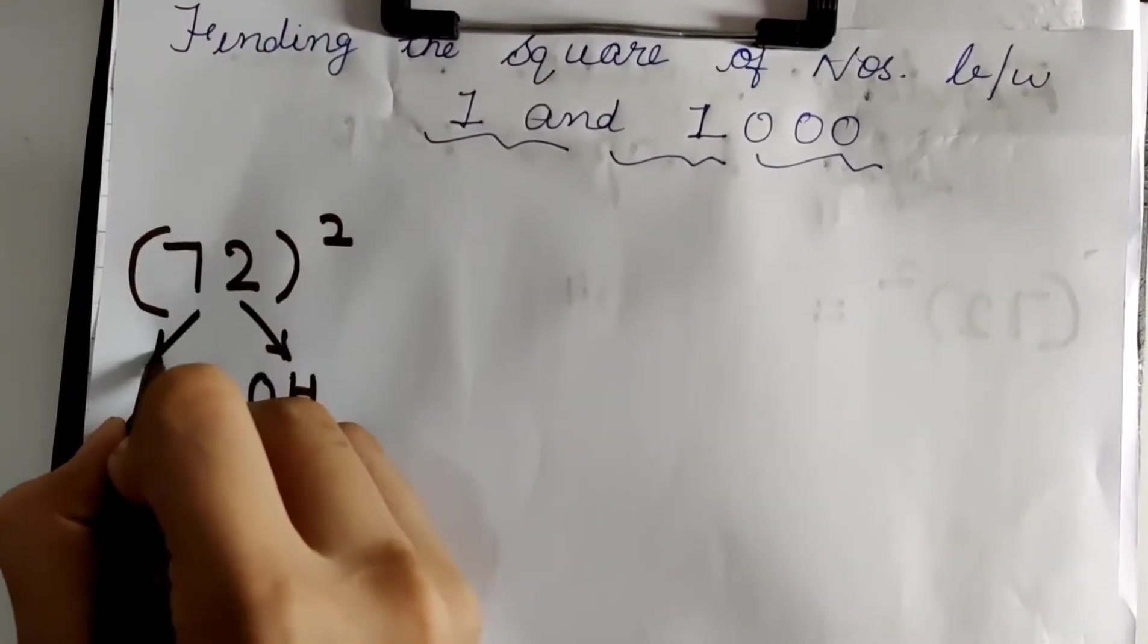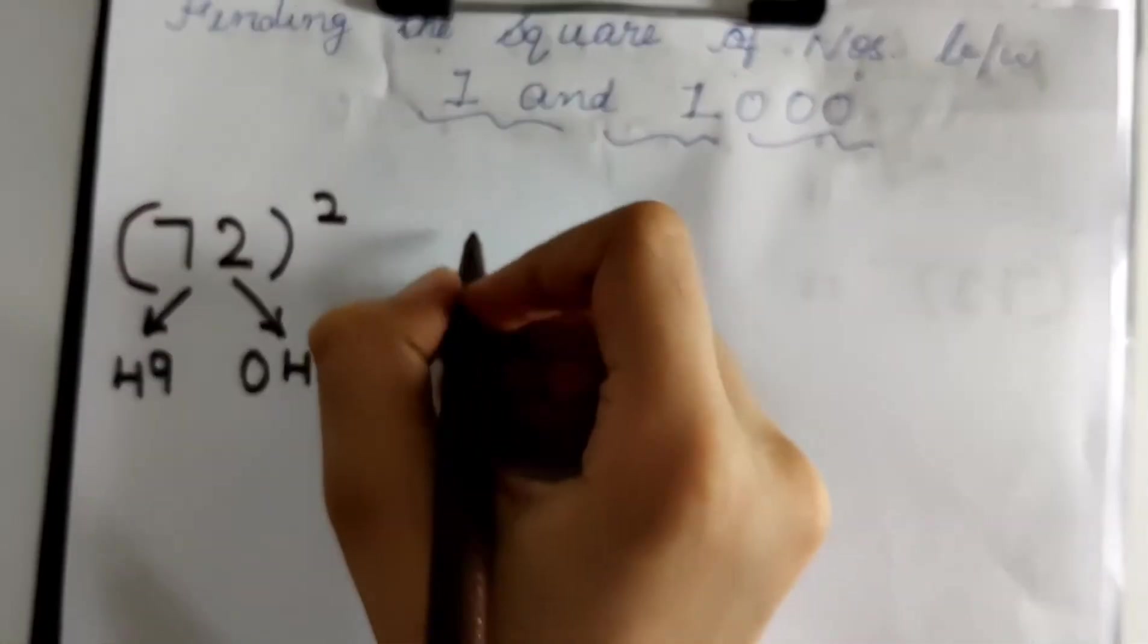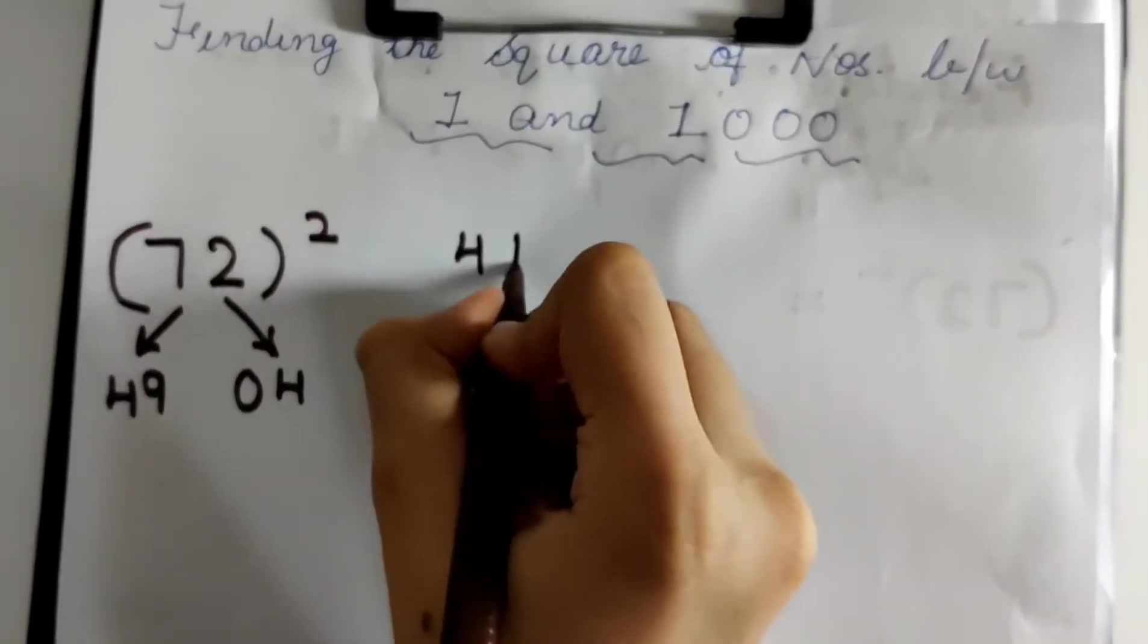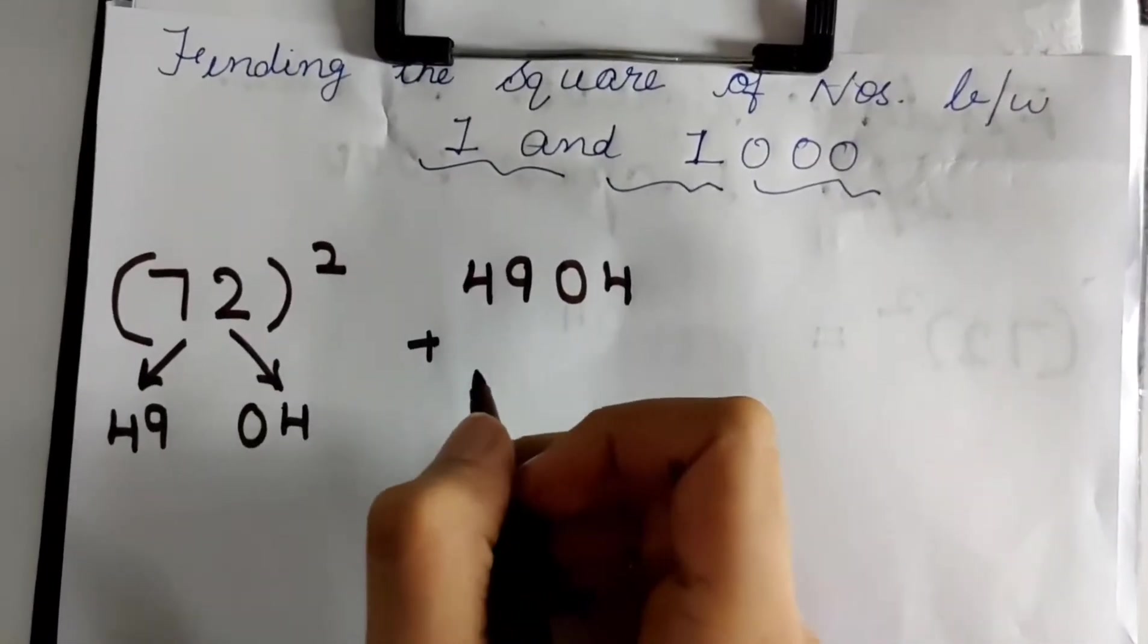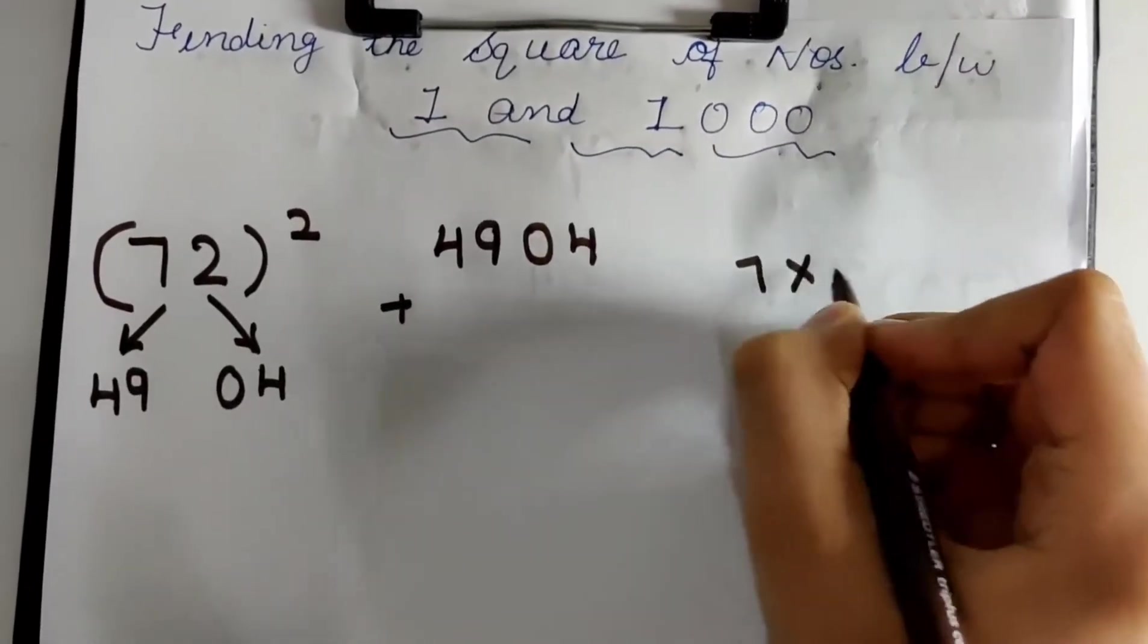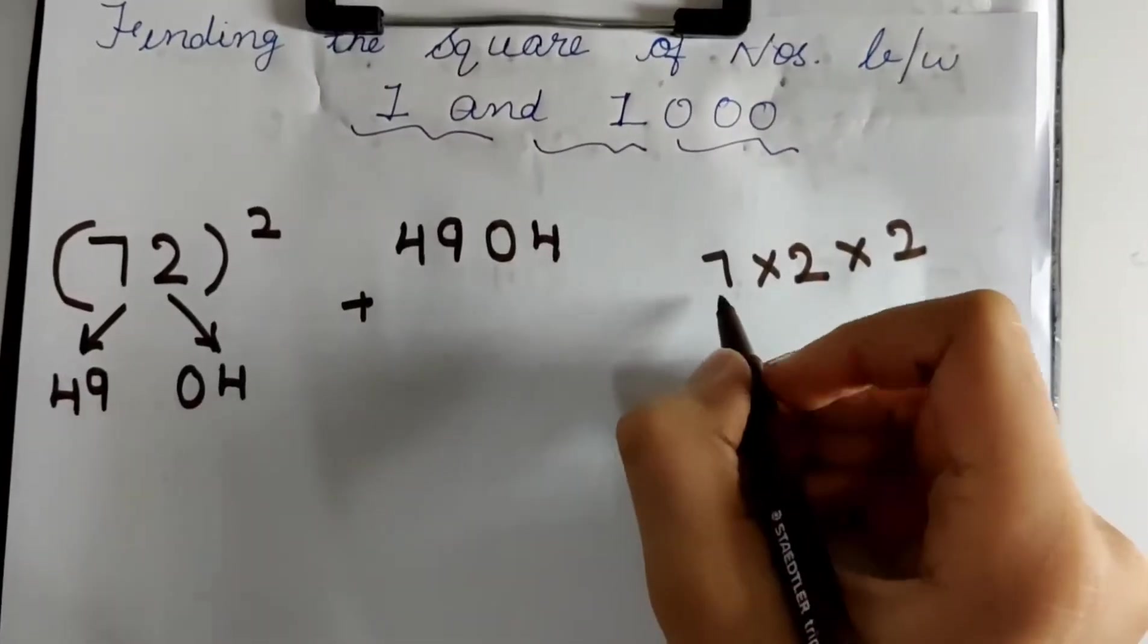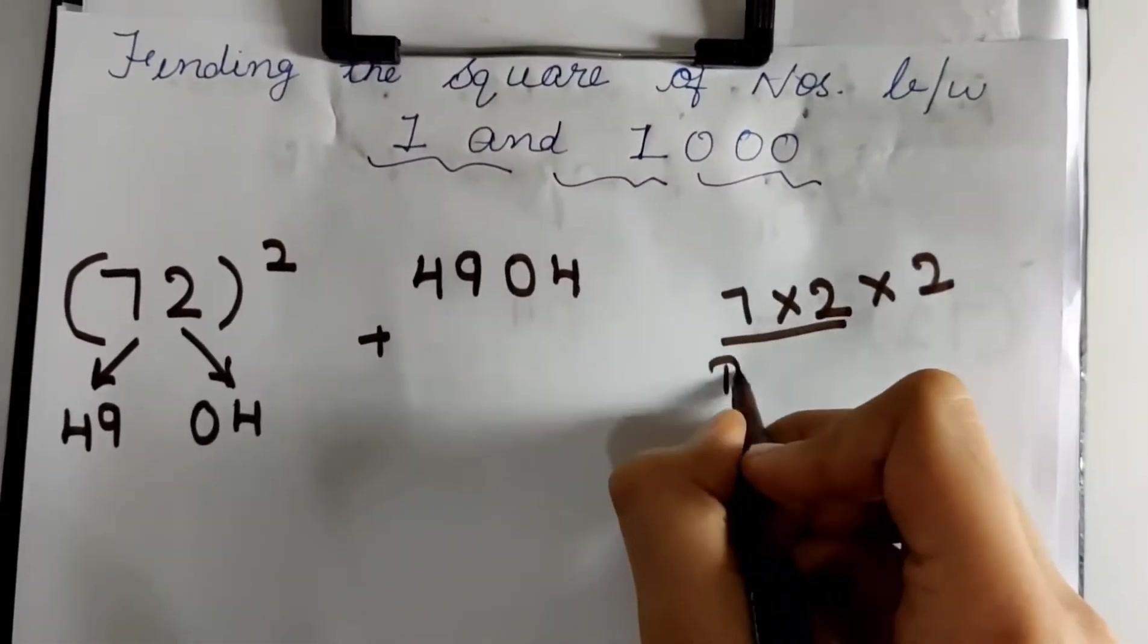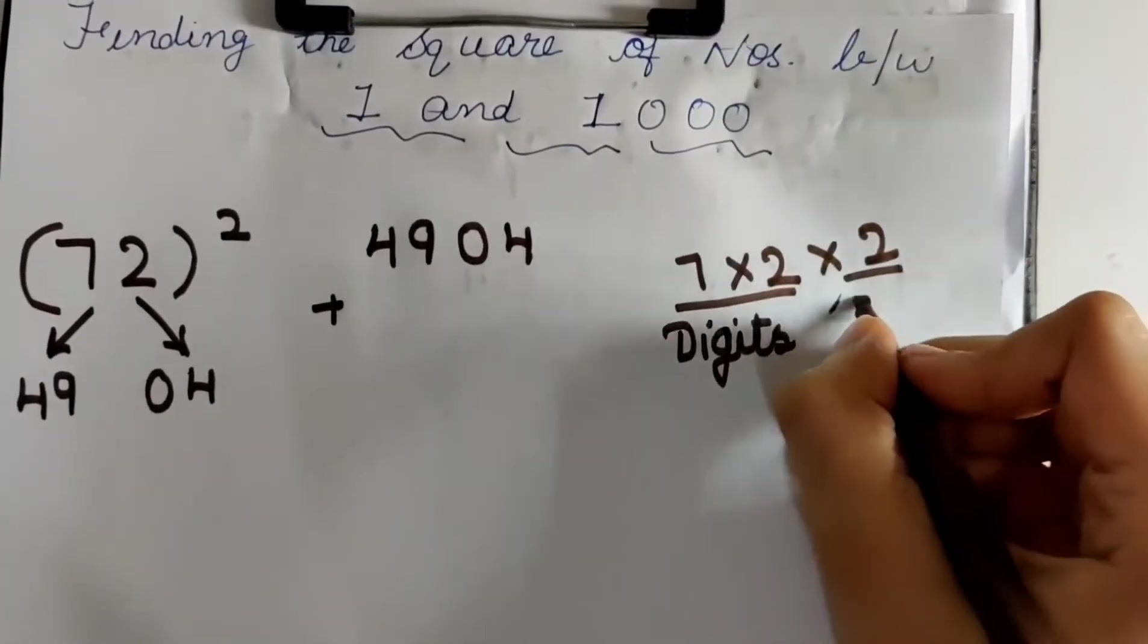Now, 7 square is 49. What I have to do is write 4904. These are the digits and this is the square.